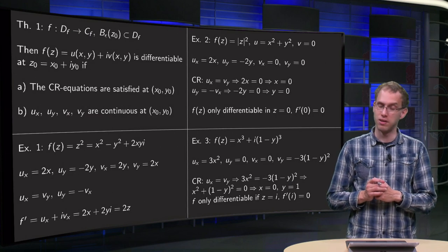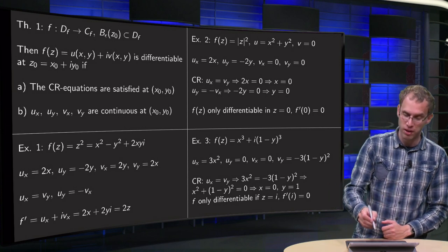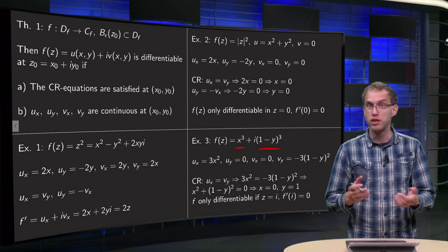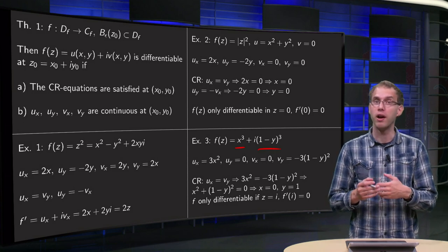And then finally, this third example, f of z equals u plus i times v. Is f differentiable? And if so, where? What's the derivative?